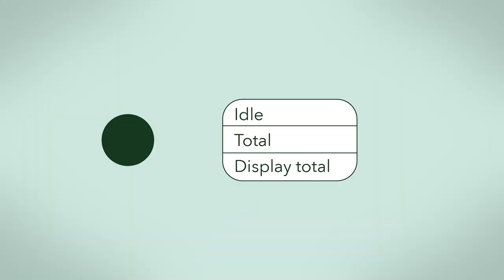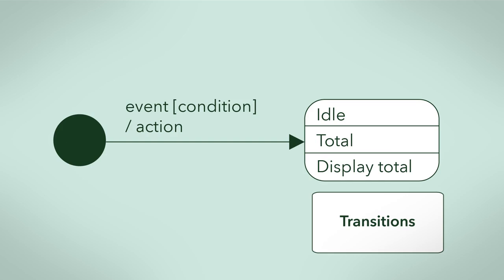Inserting a coin is an event that could change the state of the vending machine. Events that could change a state label transitions between the states. You draw these transitions with arrows from one state to another. Each transition arrow will always have an event and may have a guard condition and an action.